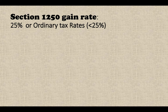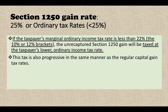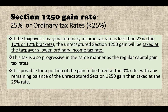For the Section 1250 gains rate, you have a choice: either use 25 percent or the ordinary tax rate when the ordinary tax rate is lower than 25 percent. If the taxpayer's marginal ordinary income tax rate is less than 22 percent — such as the 10 percent or 12 percent bracket — the unrecaptured Section 1250 gains will be taxed at the taxpayer's lower ordinary income tax rate. This tax is also progressive in the same manner as the regular capital gain tax rates. It is possible for a portion of the gains to be taxed at the zero percent rate, with any remaining balance of unrecaptured Section 1250 gains then taxed at a 25 percent rate.